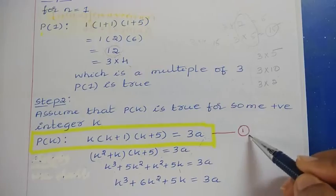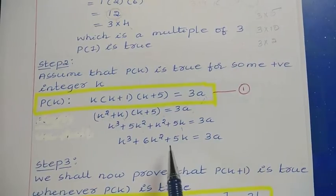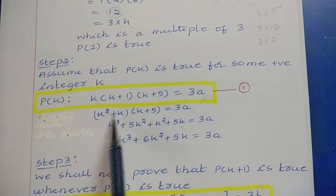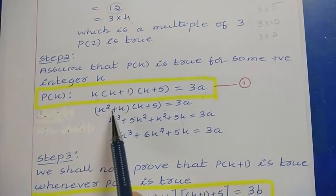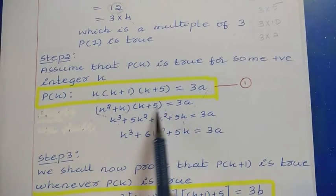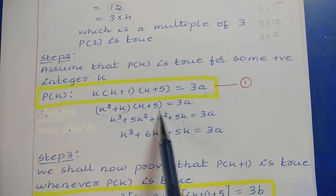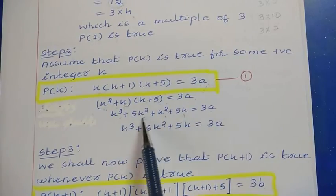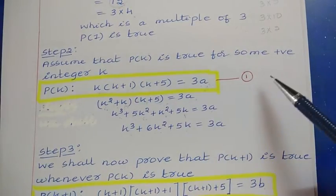Let us call this statement 1. We further simplify P(k) to use it later. Expanding k(k+1)(k+5): k(k+1) gives k²+k, then multiplying by (k+5) gives k³ + 5k² + k² + 5k = k³ + 6k² + 5k = 3a. This is our assumption.